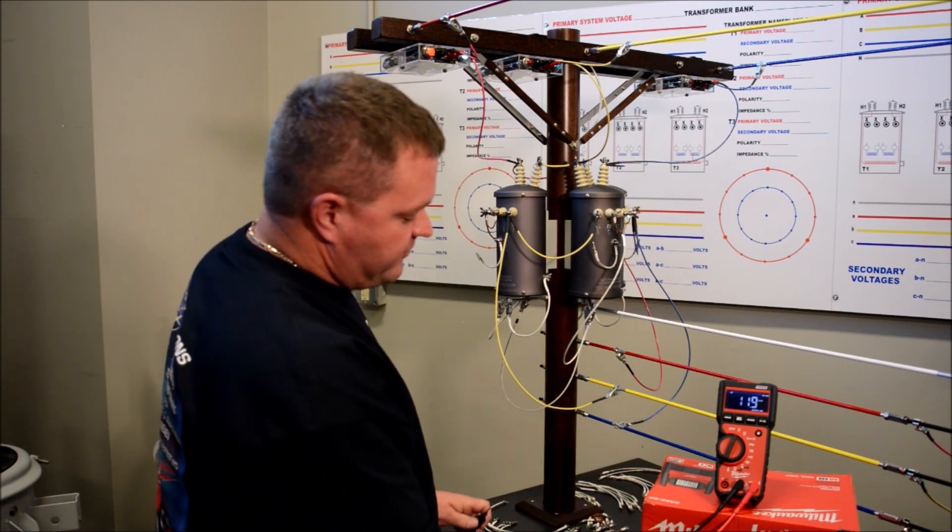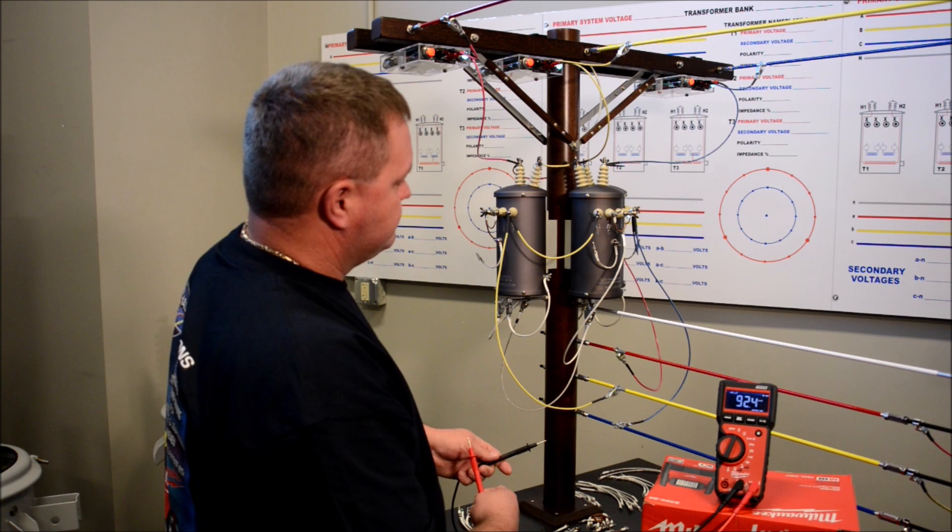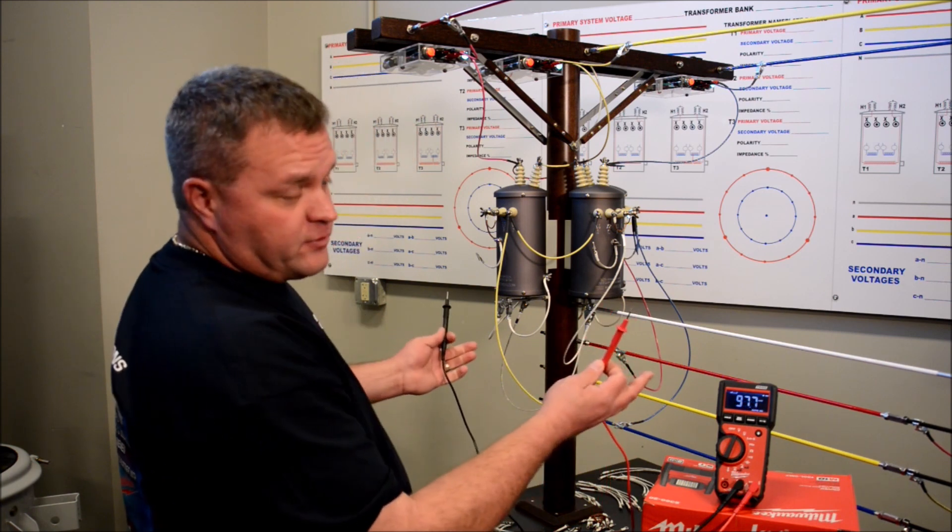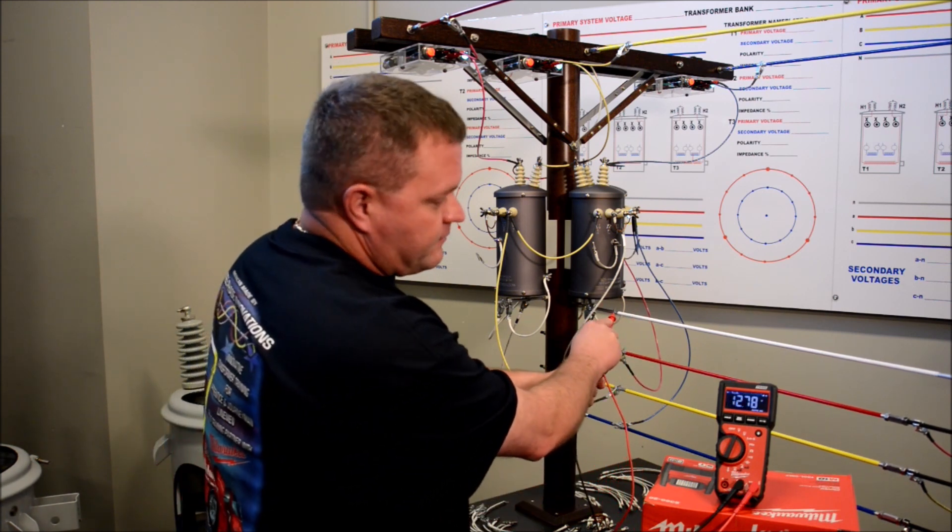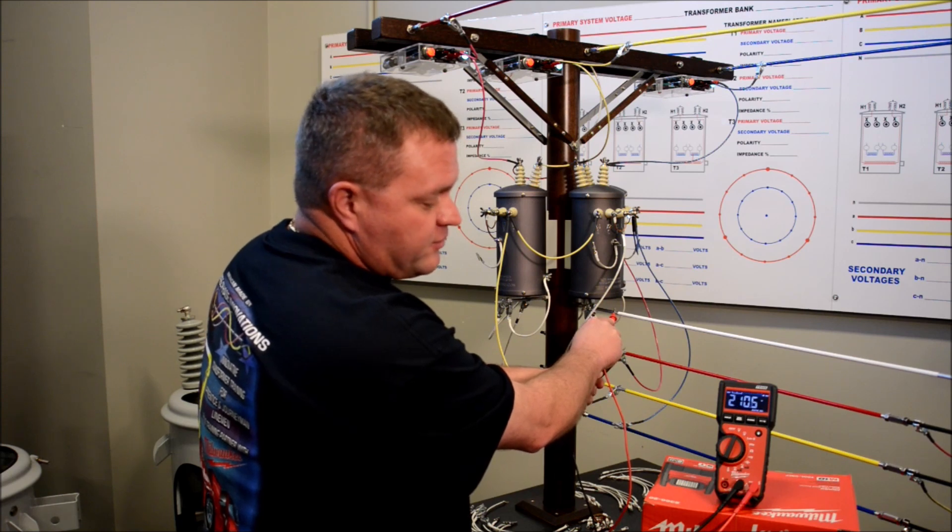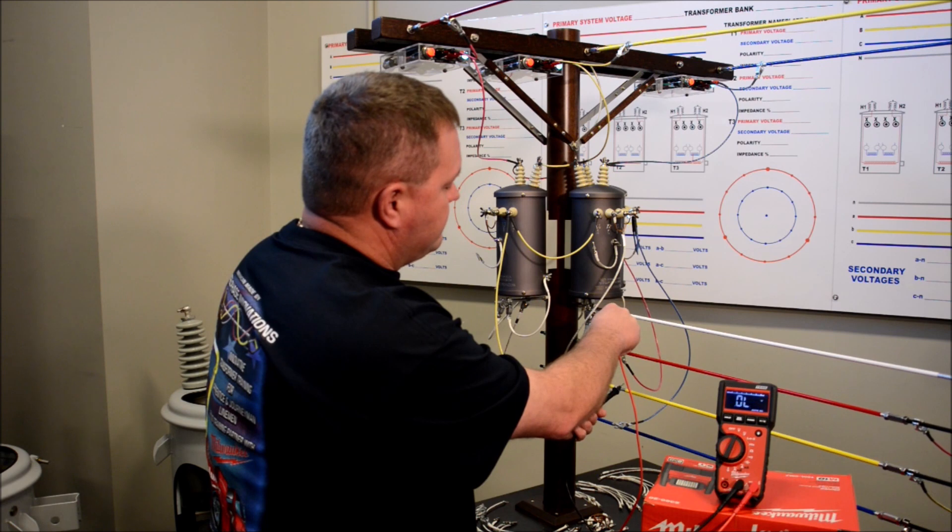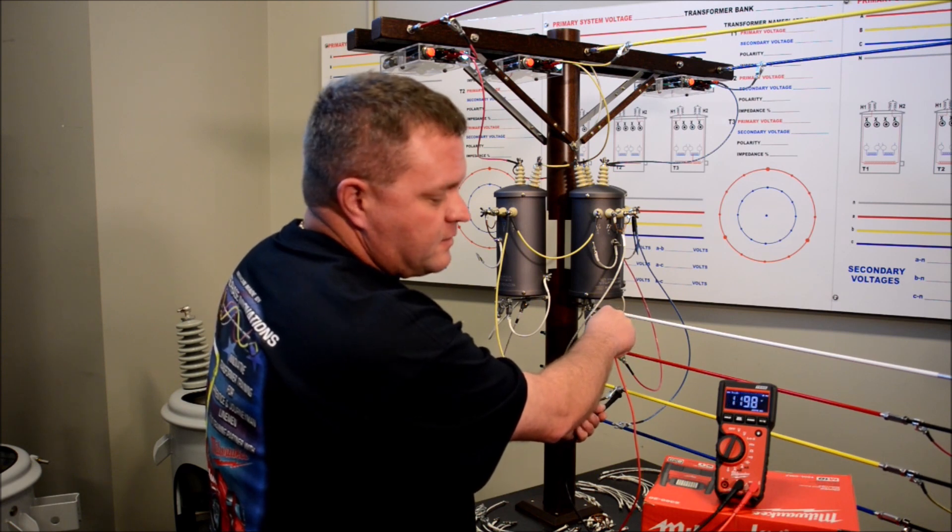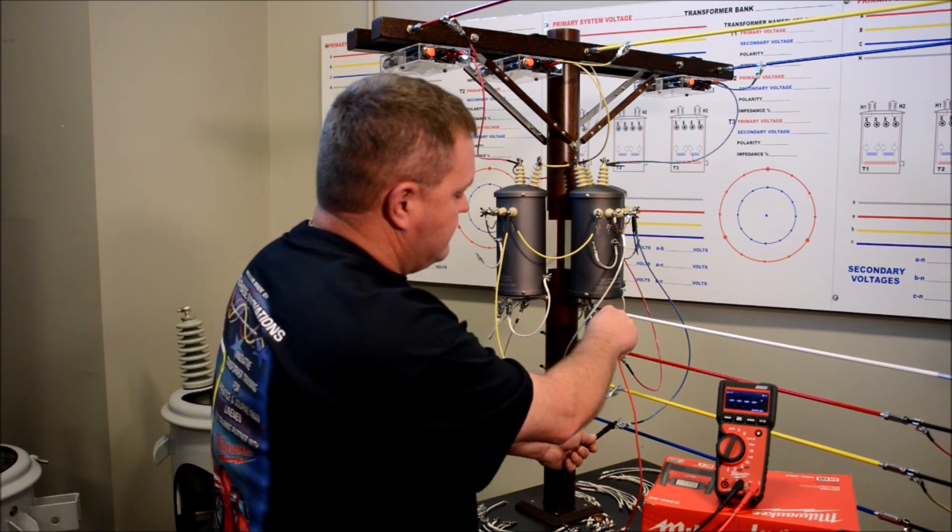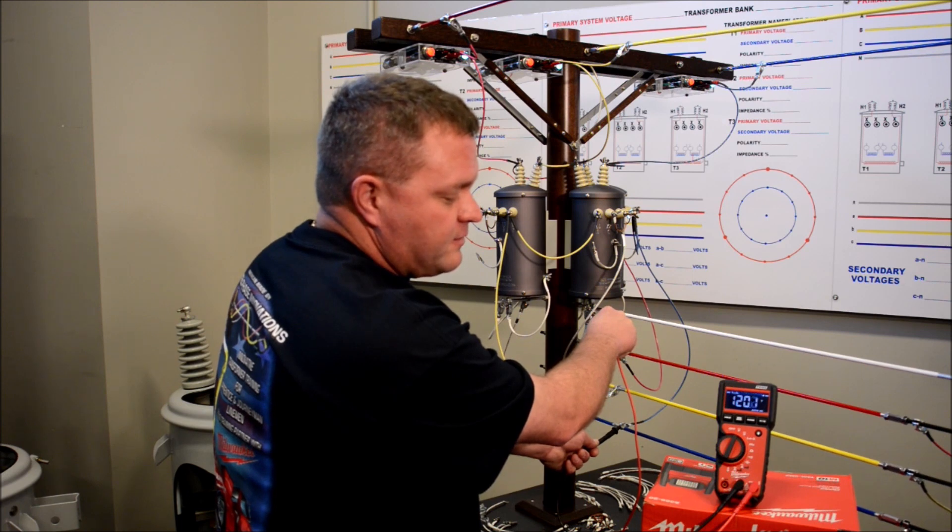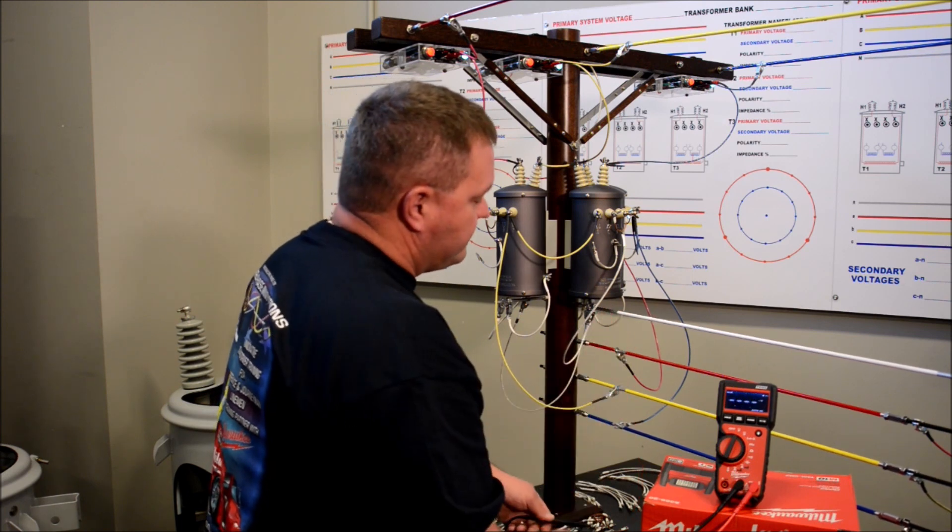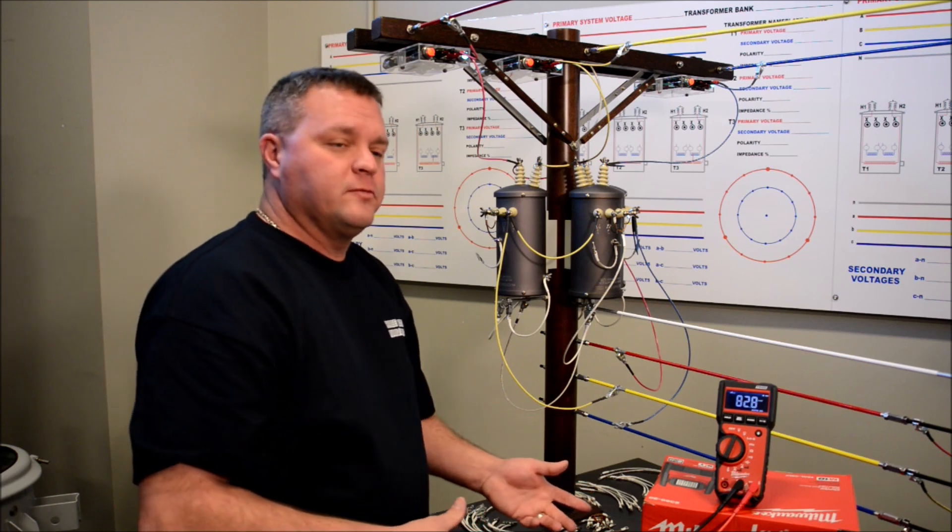Right now we're going to test it. So A was the furthest phase away from the ground, 210 approximately. That's good. B phase 119, C phase 120. These voltages do vary a little bit. These are no-load transformers.